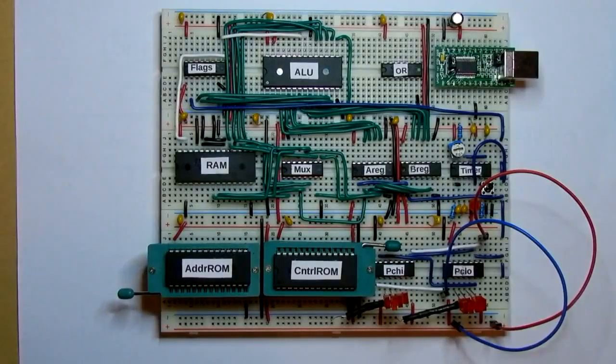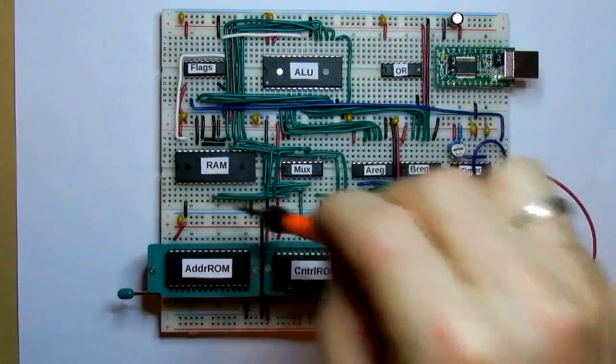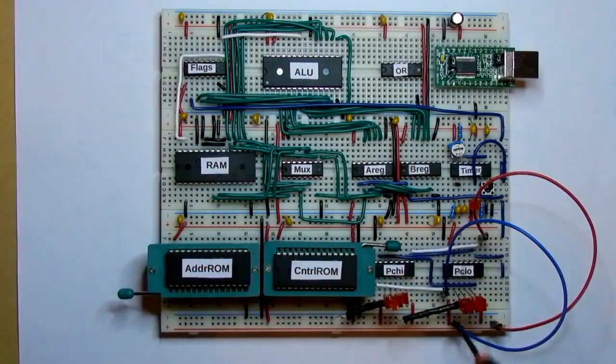Welcome back to the next video in the Crazy Small CPU video series. We've got the data paths all wired up on the CPU and we're just starting on the address side of things. In this video we're going to look at how the program counter operates.